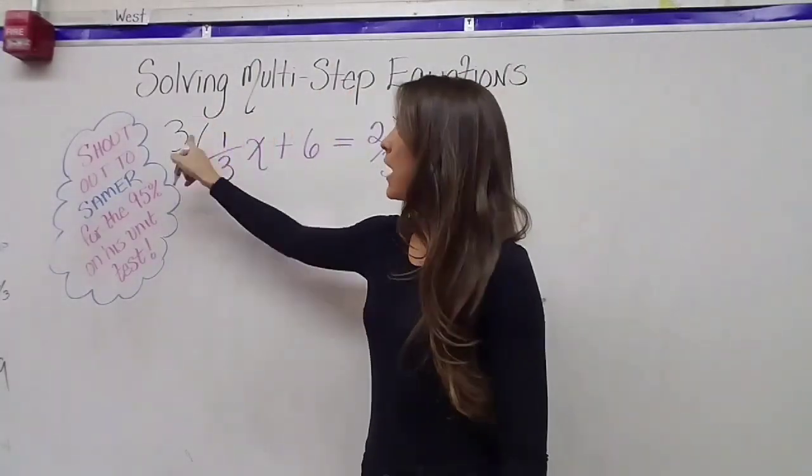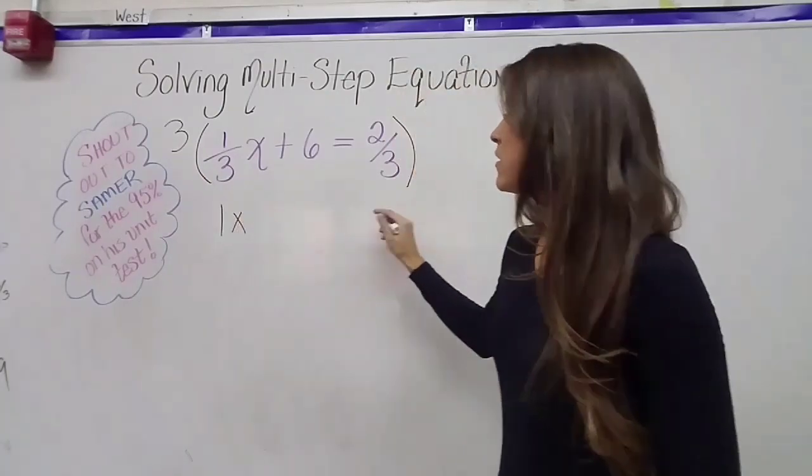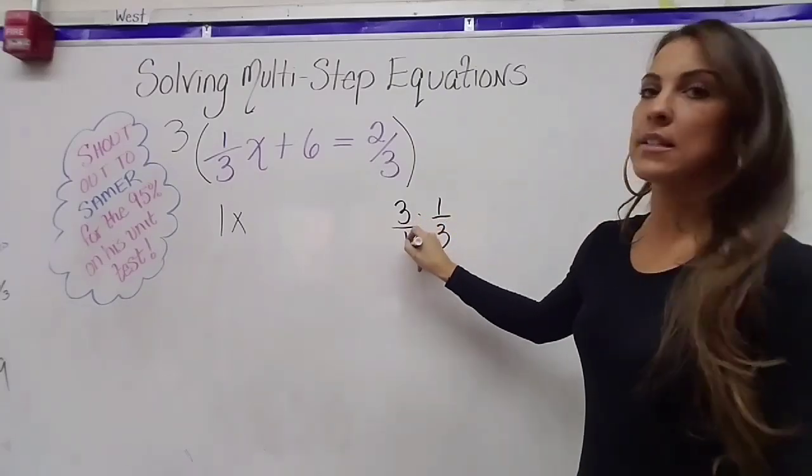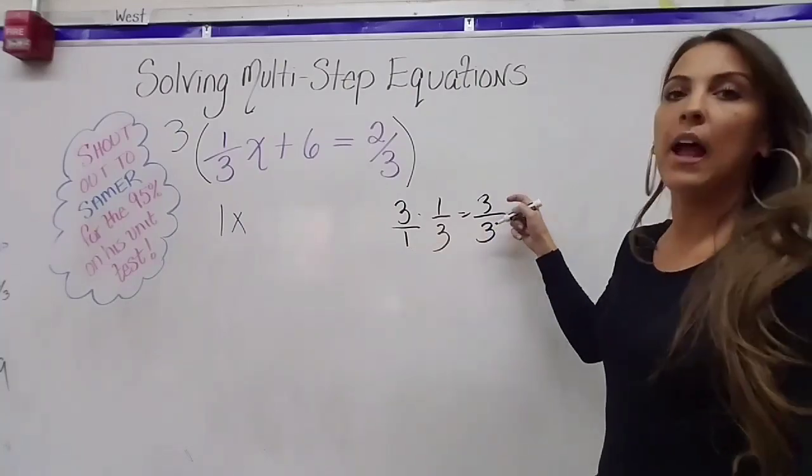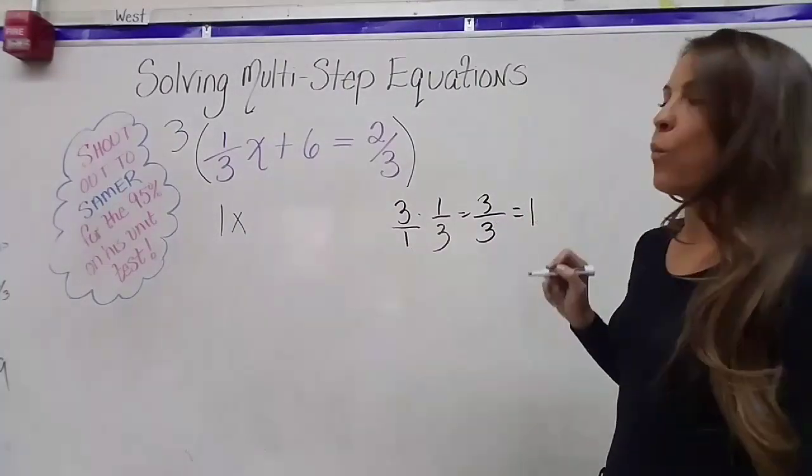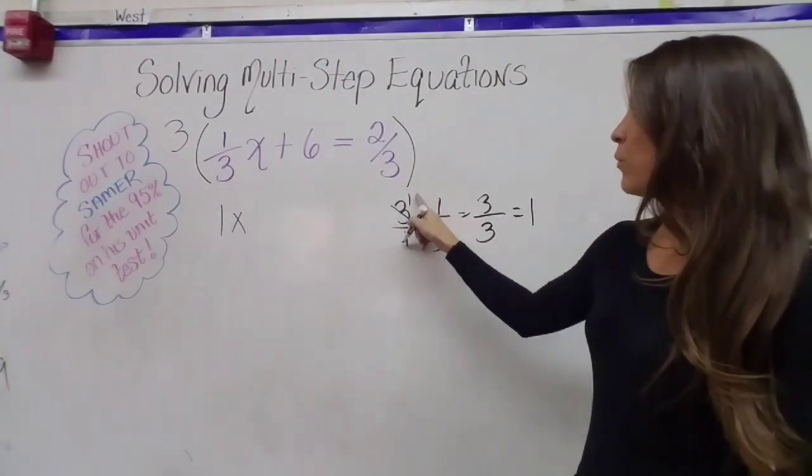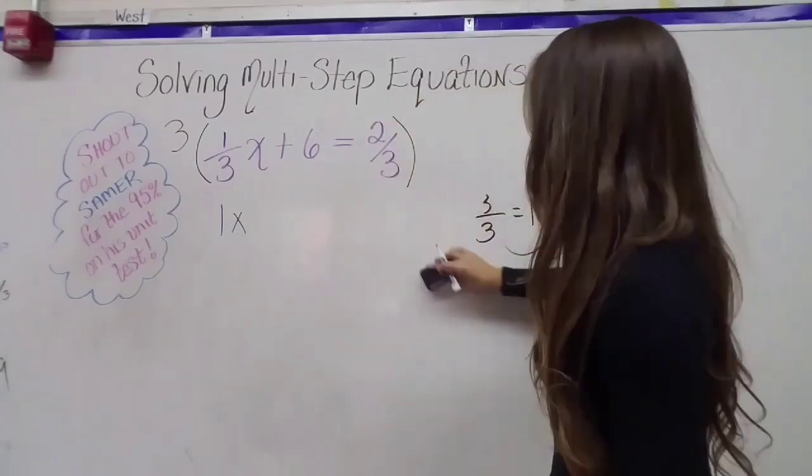So three times one-third x will give me one x. If you need to see it the long way on the side, three, which is the same as three over one, three times one is three, and one times three is three, and three divided by three is one. But the shortcut is really just to look at it and say three goes into three once, one times one is one. So I just got a one x there, which is nice.